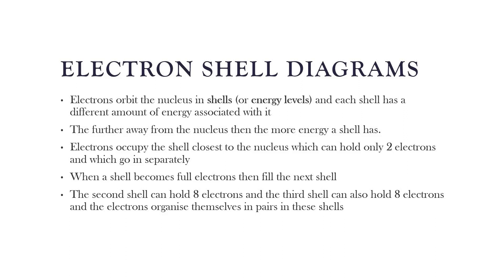The second shell can hold eight electrons, and the third shell can also hold eight electrons. Electrons organize themselves in pairs in these shells. In the first shell they do not enter in pairs, but in the rest of the shells where we have eight electrons, it divides them into pairs. For example, we will be having two each in a shell.